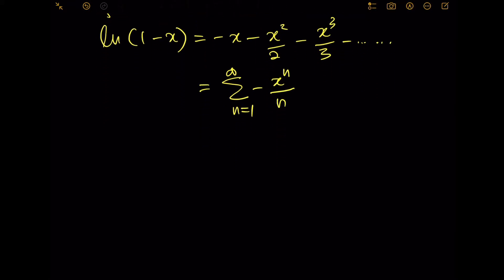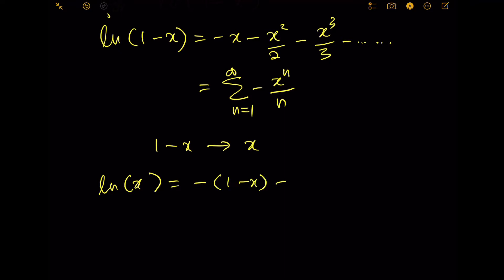In order to get the expansion for ln(x), let's do a shift: replace 1 minus x with x. This means ln(x) becomes negative bracket (1 minus x) minus (1 minus x) squared over 2 minus (1 minus x) cubed over 3 and so on.